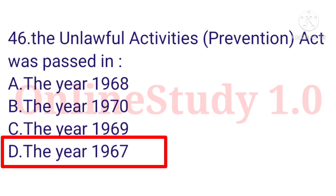Question number 46: The Unlawful Activities Prevention Act was passed in the year 1967.